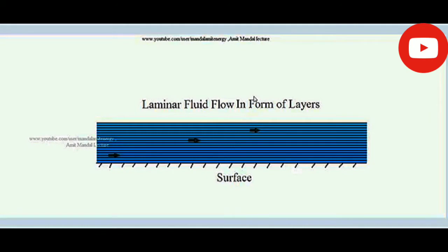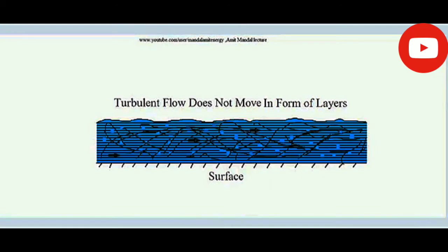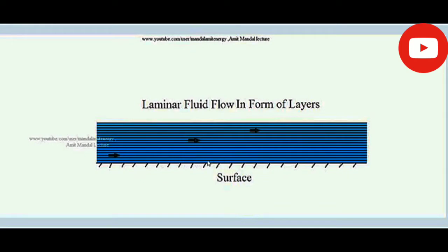Suppose this is a solid surface over which some fluid is flowing. When fluid flows over a surface, two types of flows are possible: laminar flow and turbulent flow. In laminar flow, the fluid flows in the form of well-defined sheets with well-defined paths. You can imagine the fluid is composed of many layers — one sheet of molecules over another — and all those layers move parallel to each other.